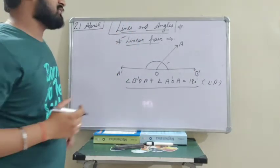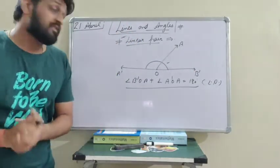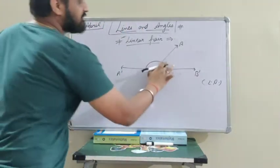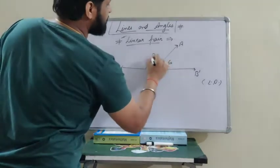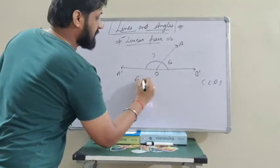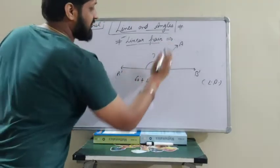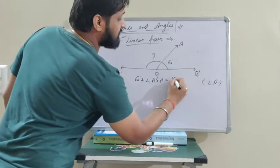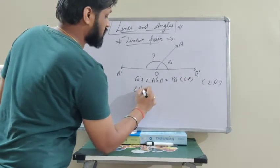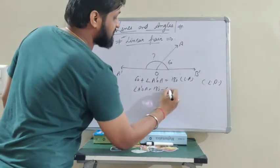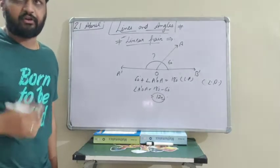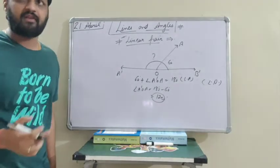For example, if this angle is 60 degrees, can you find the other angle? Yes, because 60 degrees plus angle A'OA equals 180 degrees — that is linear pair. So angle A'OA equals 180 degrees minus 60 degrees, which is 120 degrees. So 120 degrees is the answer. This is the concept of linear pair.